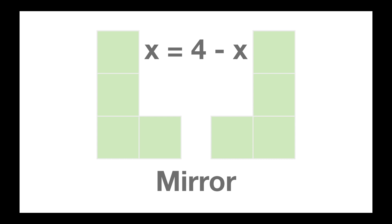Mirroring basically takes every x on the left and translates that to 4 minus x on the right, and the result is mirroring the list of points about the x equals 2 axis.